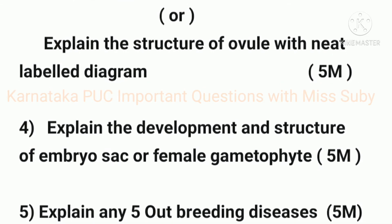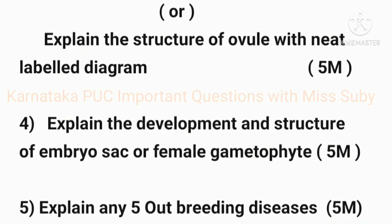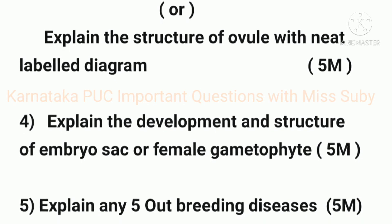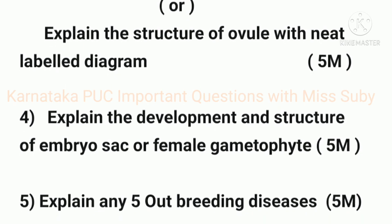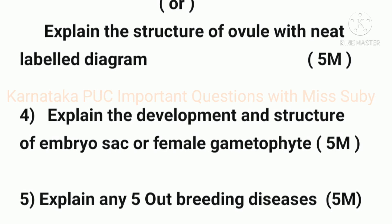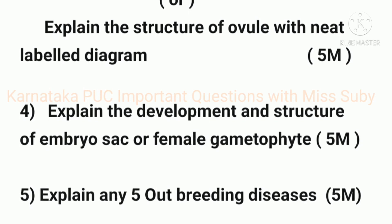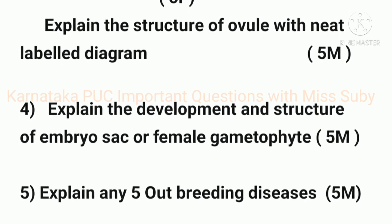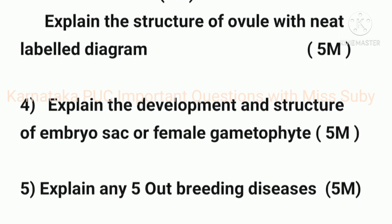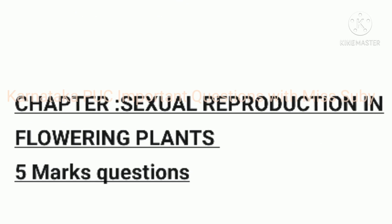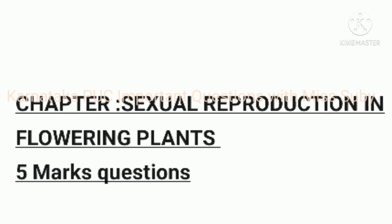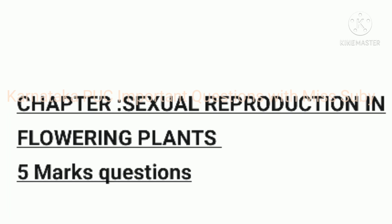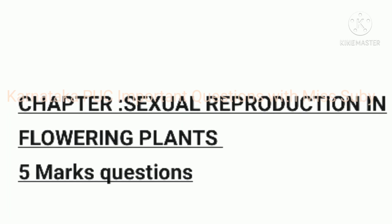The fifth question is explain any 5 outbreeding devices, for 5 marks. So friends, these were some 5 mark important questions from the chapter sexual reproduction in flowering plants. Hope it will be very useful for you all.